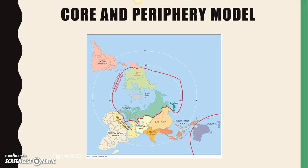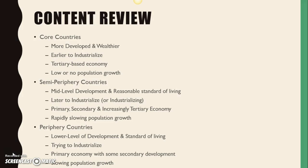Everything that's not core is less developed, or is some form of periphery. The model itself comes from Emanuel Wallerstein, and it basically looks at the structure of the world economy and why things are the way they are.